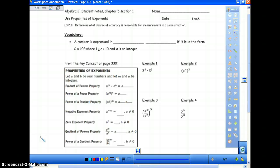Okay, so this is going to be the notes for Chapter 5, Section 1. The name of the section is Using Properties of Exponents. This is something you've done before. Bear with us in this first video. We'll go through these notes. You fill them in and bring questions that you have tomorrow when we get to work in class. So the objective for today is to determine what degree of accuracy is reasonable for measurements in a given situation.